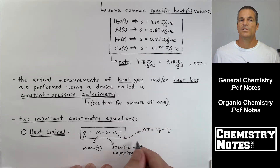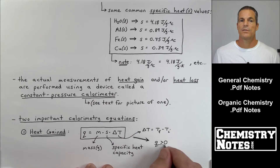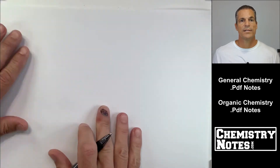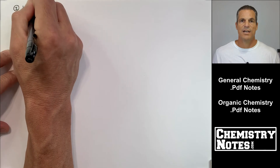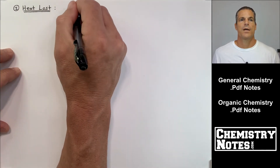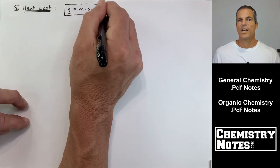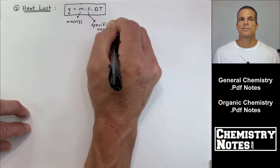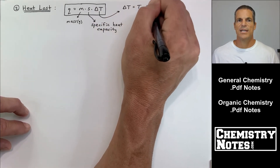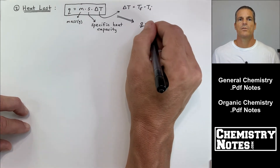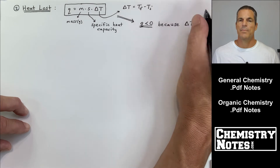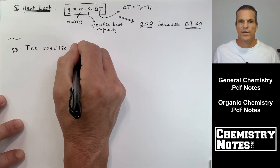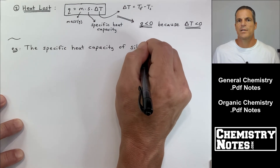In q = msΔT, delta T is final temperature minus initial temperature. Mass and specific heat capacity are always positive. For heat gain, q must be greater than zero, meaning ΔT (Tf minus Ti) is also greater than zero. For heat lost, the equation is the same — q = msΔT — but q is negative because ΔT is less than zero, meaning heat is lost to the surroundings or to the other substance.